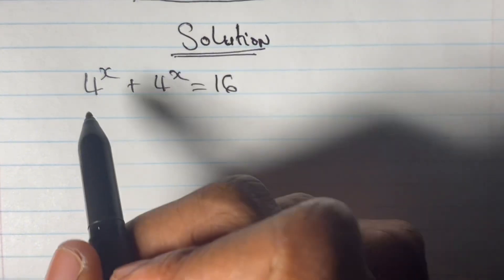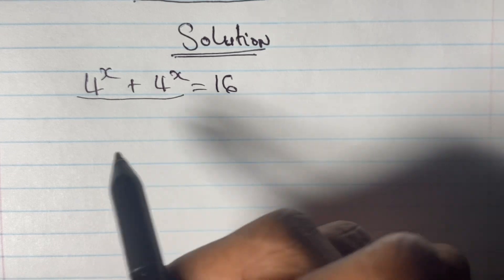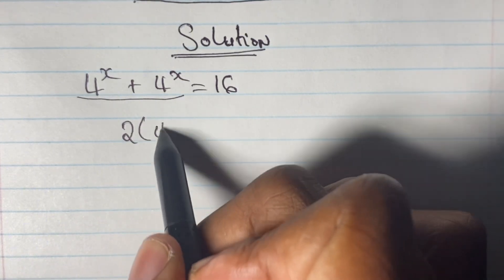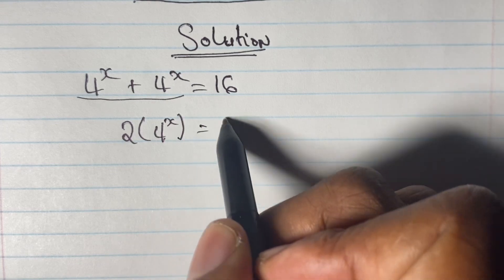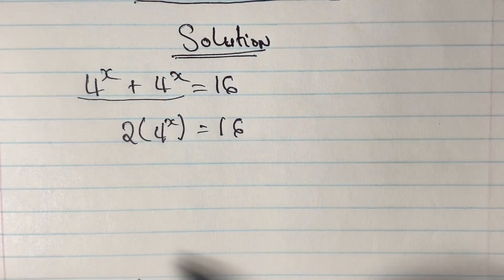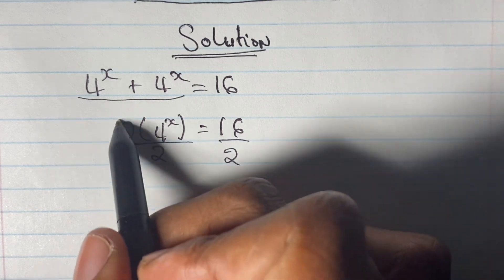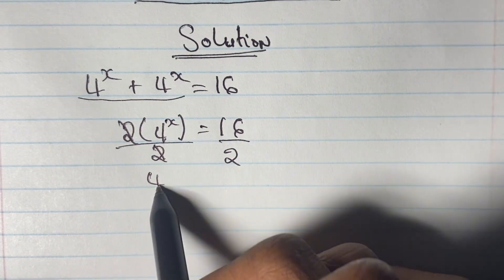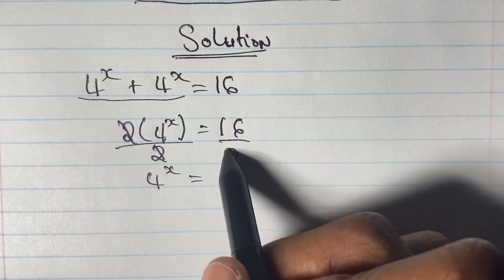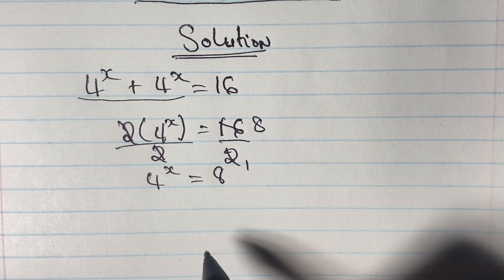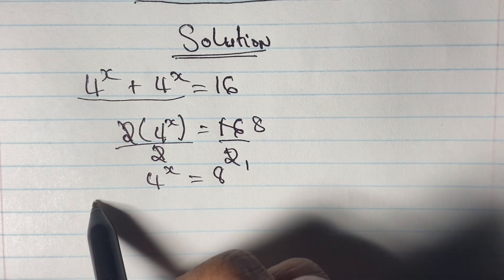So here we have 4 to the power of x plus 4 to the power of x is equal to 16. 4^x + 4^x can be simplified as 2 times 4^x is equal to 16. Then we go ahead and divide both sides by 2 to leave 4^x on one side of the equation. This helps to simplify our equation so we can go ahead and use log to find the value of our x. So we have log 4^x is equal to log 8.